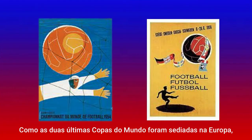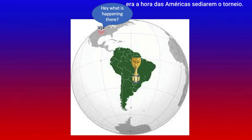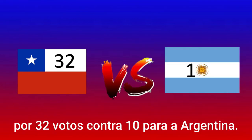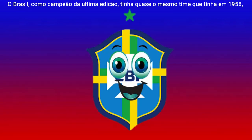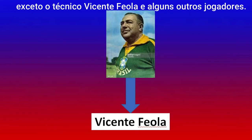Since the last two World Cups were hosted in Europe, it was time for the Americas to host the tournament. On July 10, 1956, Chile was chosen to be the host of the 1962 World Cup by receiving 32 votes against 10 votes for Argentina. Brazil, as the former last champions, had almost the same team that they had in 1958, with the exception of Coach Feola and some other players.